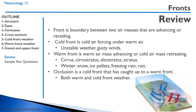A front is the boundary between two air masses that are advancing or receding. A cold front is cold air forcing itself under the warm air — it's associated with unstable weather and gusty winds. A warm front is a warm air mass advancing or a cold air mass retreating; the associated clouds are cirrus, cirrostratus, altostratus, and stratus. In winter we can get winter warm fronts with snow, ice pellets, freezing rain, and then rain. An occlusion or trowel is a cold front that has caught up to a warm front, giving you both warm and cold front weather.